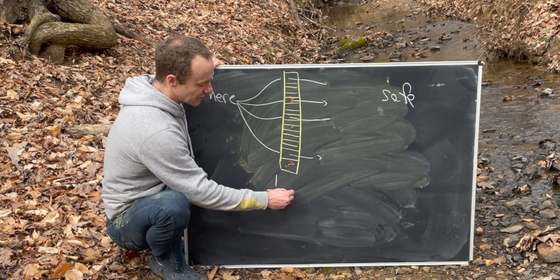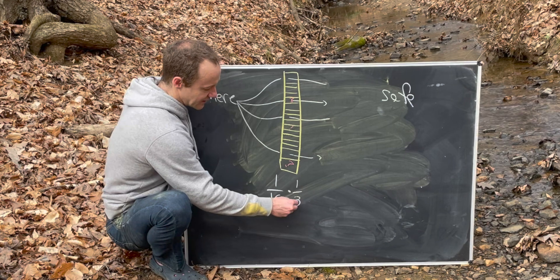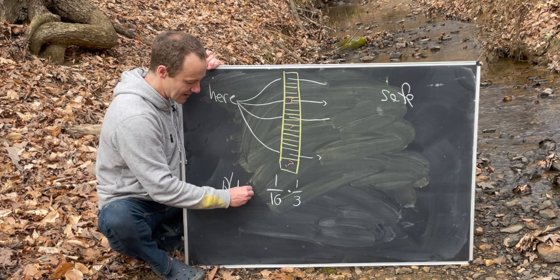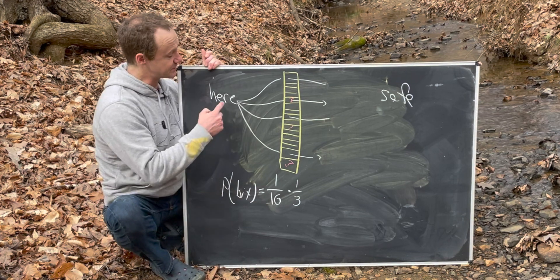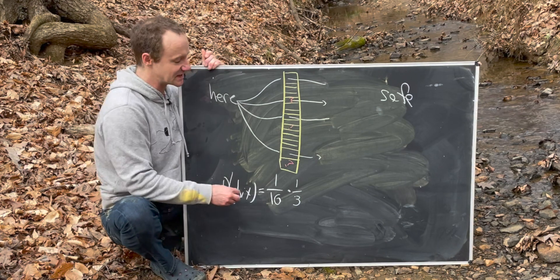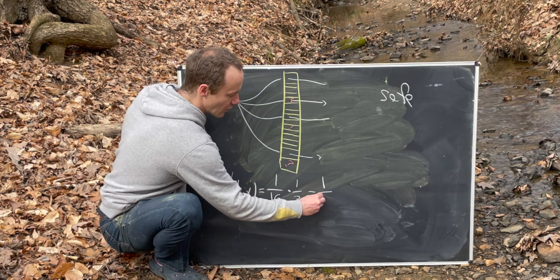So using the multiplicative property of probabilities, that means the chance that I get bit, so the probability that I am bit on this path from here to my next safe space is 1 over 16 times 1 over 3 or 1 over 48.